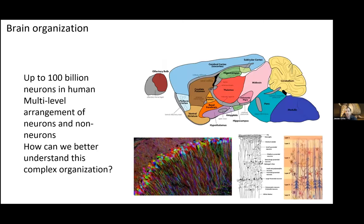My lab has a lot of interests. Like many computational labs, we're more focused on methods than systems, so we end up focusing on many systems. One of our central systems is the brain, as part of the Brain Initiative Cell Atlas Network. The brain is a very complex system — almost underselling it to call it complex, with a lot of structure, substructure, interesting homologies across species, and a lot of cellular phenotype variability.